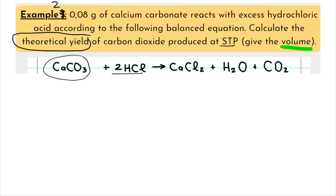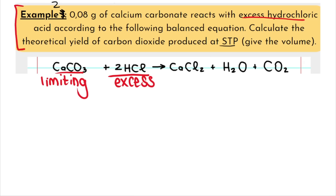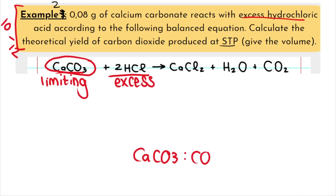Step 1: determine which reagent is limiting. In this question, they told me hydrochloric acid is in excess, which means calcium carbonate is limiting. So I don't need to work it out — they tell me which one is limiting. Even if you don't fully understand limiting and excess in grade 10, you just need to know that the limiting reagent is the one that goes into the mole ratio with the product — always.